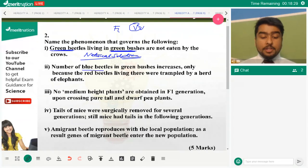Number of blue beetles in green bushes increases only because the red beetles living there were trampled by a herd of elephants. Now as I explained previously, this was an accident or an unplanned event that happened by accident and it changed the frequency of alleles in the population. That means this was genetic drift.